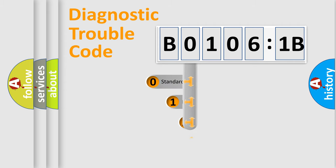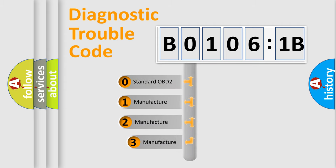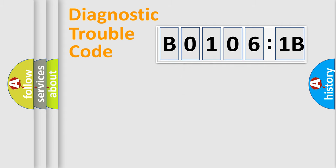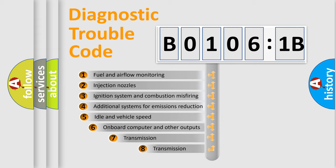This distribution is defined in the first character code. If the second character is expressed as zero, it is a standardized error. In the case of numbers 1, 2, or 3, it is a manufacturer-specific expression of the car-specific error.